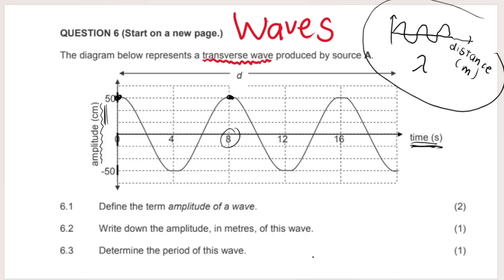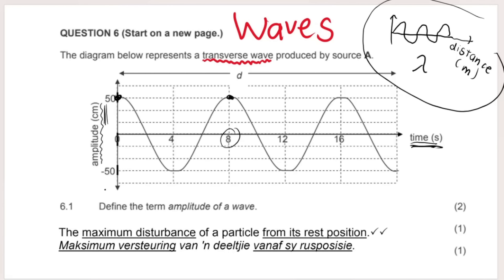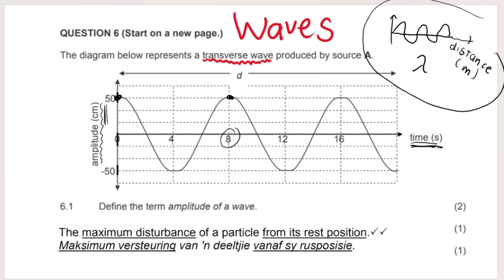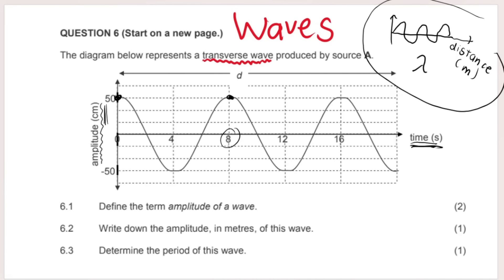Define the term amplitude of a wave: the maximum disturbance of a particle from its rest position. The rest position is essentially the x-axis line. The amplitude here is 50 centimetres. The next part asks for the amplitude in metres, so you must convert: centimetres to metres, divide by 100 — therefore the amplitude is 0.5 metres.